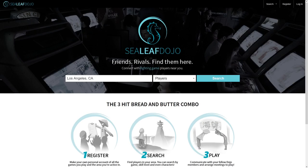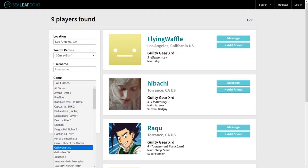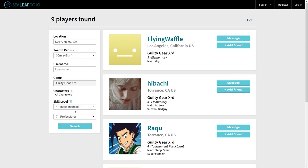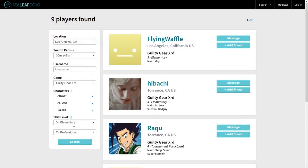Before we end this video, we want you to know that we developed a website called SealeafDojo.com for finding players and events based on games and location. For example, if you are looking for Guilty Gear Xrd players in Los Angeles, California, just type it in our search bar and find players in that area. You can even search based on skill level and characters you want to play. We still have a small player base, so you may or may not find someone in the immediate area, but if you could register to grow the community, that would be greatly appreciated.